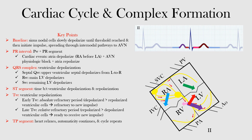So here's our lead two. Lead two sits right here. If you imagine our frontal plane, this would be lead one with the positive end at zero degrees. This is AVF with the positive end at positive 90 degrees. This would be plus or minus 180 degrees, minus 90 degrees. And then we have lead two that sits right here at positive 60 degrees. Now we're going to go through and label the cardiac cycle.